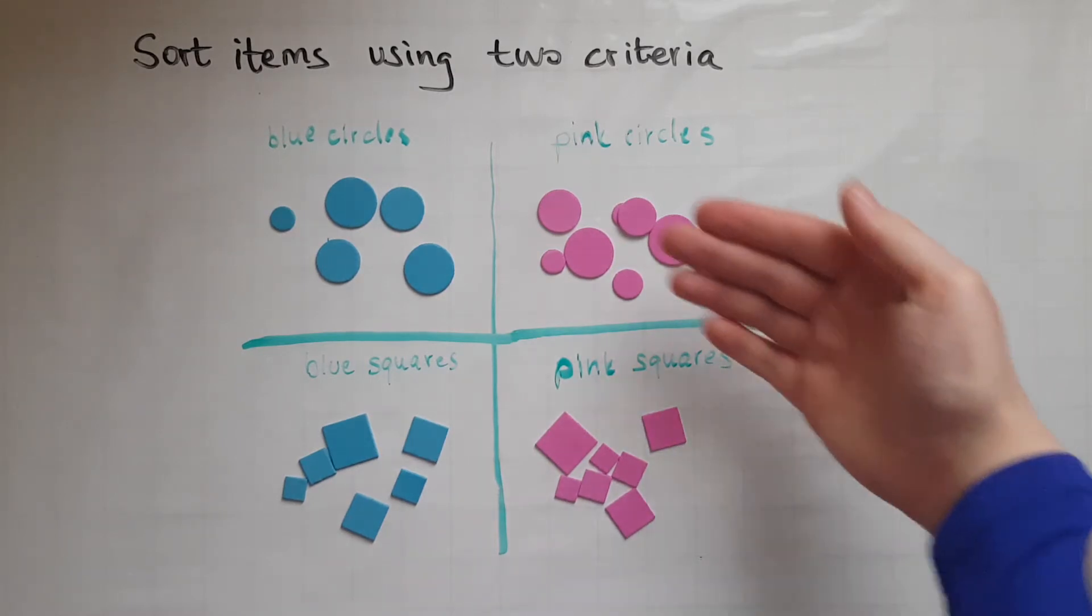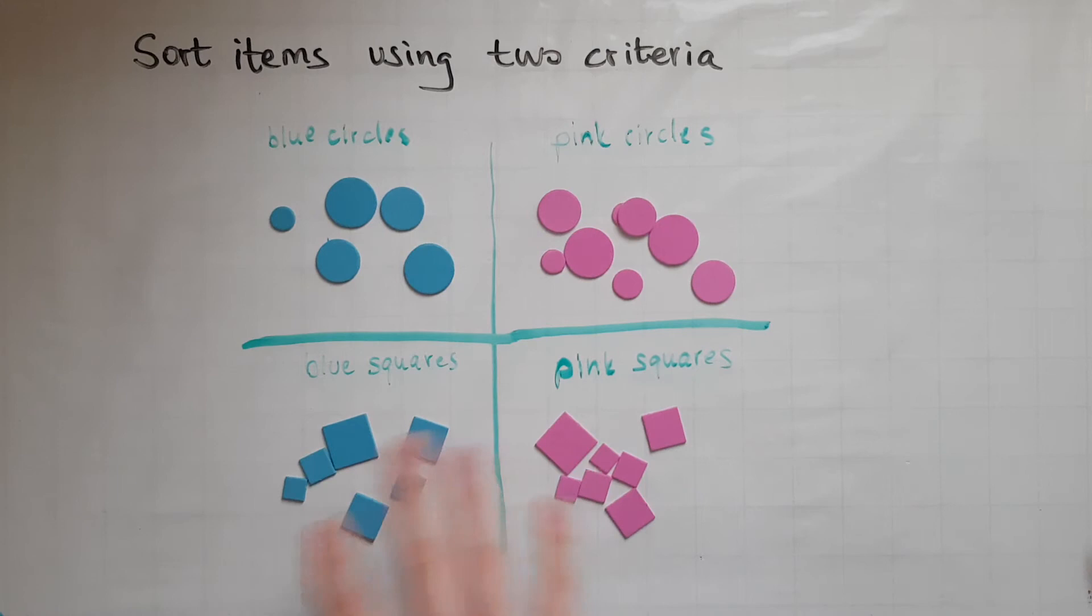So I've got circles at the top and I've got squares at the bottom. So to sort items using two criteria, you've got to look at what is different about them. So make that first sort just like I did.